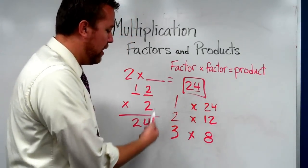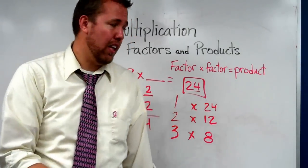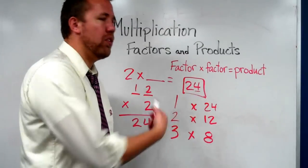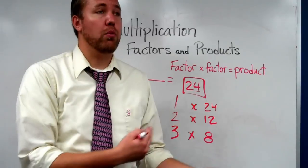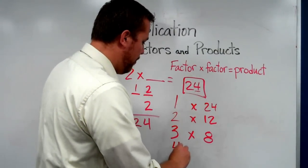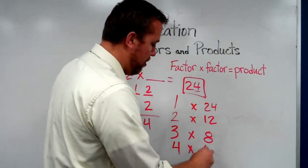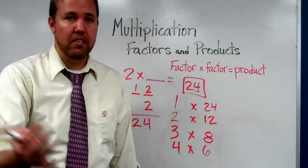And we're just starting with 1, going to 2, going to 3, and checking to see if they go in. After 3 comes 4. Does 4 go into 24? 4, 8, 12, 16, 20, 24. Yes. 4 goes into 24. 4 times what equals 24? 4 times 6.